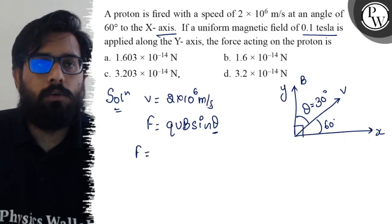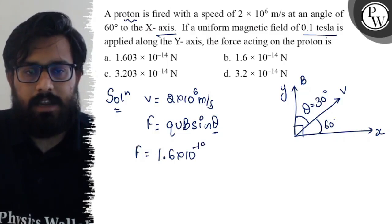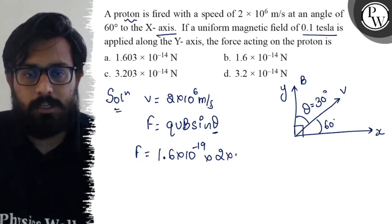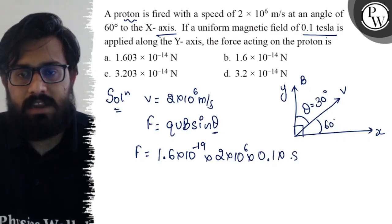So, q, because we talk about proton, so the charge of the proton is 1.6, 10 to the power minus 19, velocity 2 into 10 to the power 6, value of B comes out to be 0.1 tesla or sin of 30.